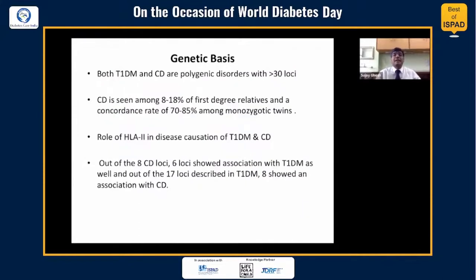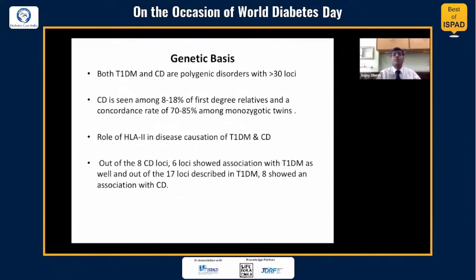Both type 1 diabetes and celiac are thought to be polygenic disorders with more than 30 identified loci. Celiac is seen even in first-degree relatives and a concordance rate of almost 70–80% is found in monozygotic twins, highlighting the importance of genetics. HLA-2 association has also found a role in causation of both type 1 and celiac. Out of the 8 celiac loci, 6 showed association with type 1 diabetes as well, and out of 17 loci described in type 1 diabetes, 8 show association with celiac disease — a gross overlap.